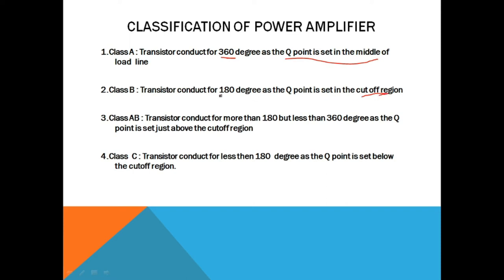In class B, the transistor conducts only for 180 degrees. In class AB, the Q-point is adjusted just above the cut-off region, which means the transistor will conduct more than 180 degrees but less than 360 degrees. In class C, the Q-point is set below the cut-off region, meaning the transistor will conduct for less than 180 degrees.